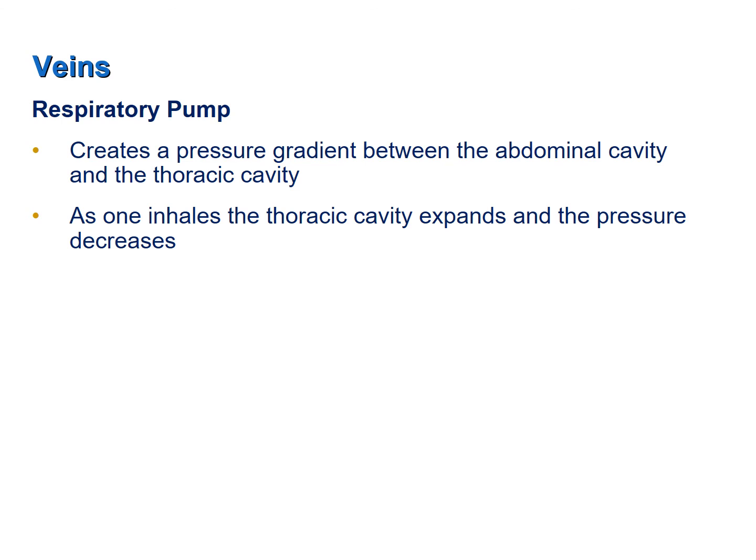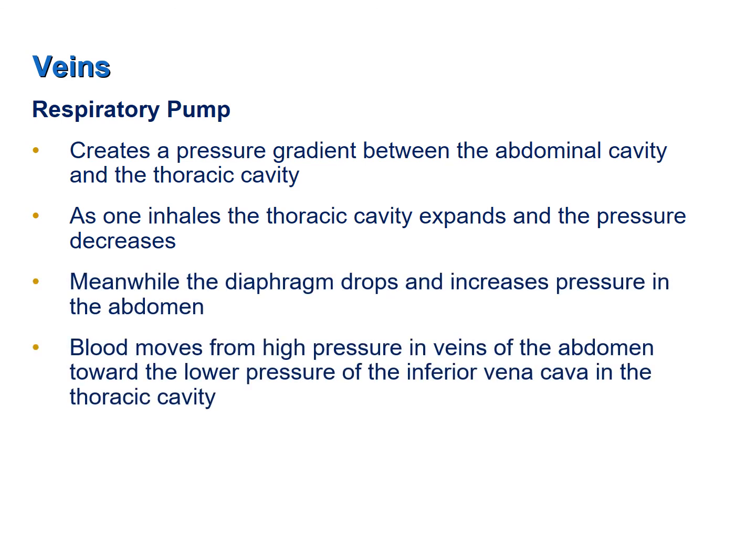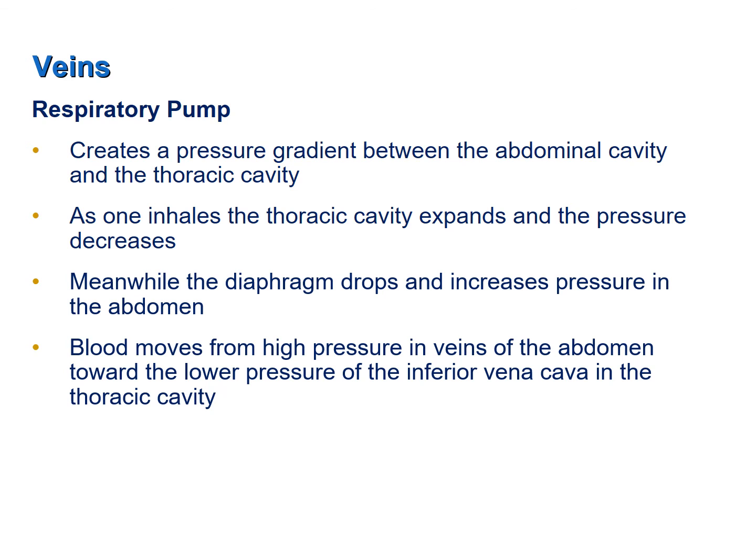The mechanics of breathing creates a pressure gradient between the abdominal cavity and thoracic cavity, which helps move blood through veins back to the heart. As you inhale, the thoracic cavity expands — volume increases and pressure in the thoracic cavity decreases. Meanwhile, the diaphragm descends, decreasing volume of the abdominal cavity and increasing pressure in the abdominal cavity. Therefore blood moves from high-pressure veins in the abdomen toward the lower-pressure inferior vena cava in the thoracic cavity. This respiratory pump helps move blood from the inferior portions of the body back toward the heart.